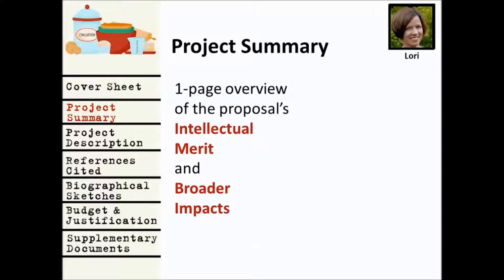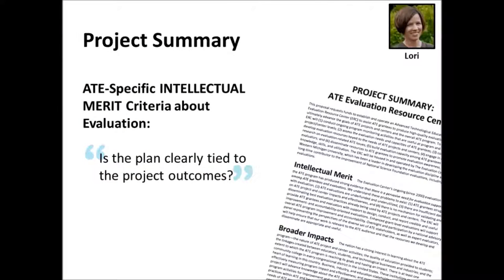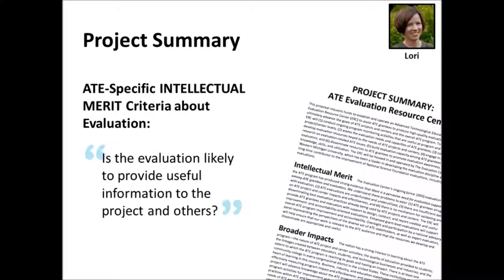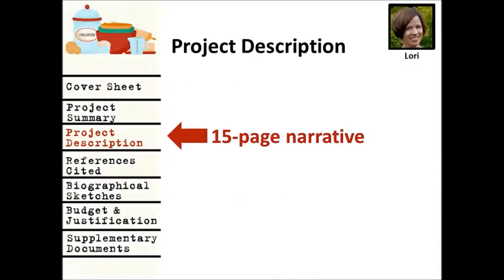Next is the project summary — this is the one-page statement of your proposal's intellectual merit and broader impacts, which are the main NSF criteria. You may not be able to address all of them within one page, so focus on the ones most relevant to you. The ATE program has some additional criteria under intellectual merit specifically related to evaluation: Is the evaluation plan clearly tied to project outcomes? Is the evaluation likely to provide useful information to the project and others? And does the project provide for effective assessment of student learning?